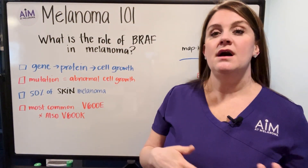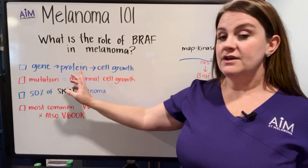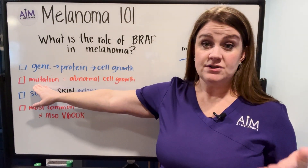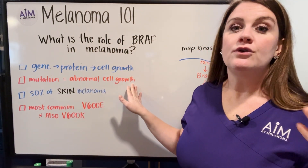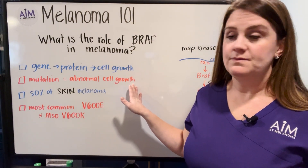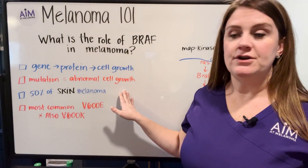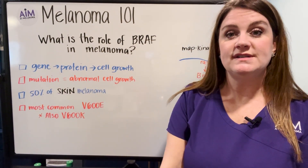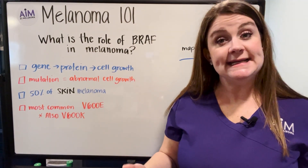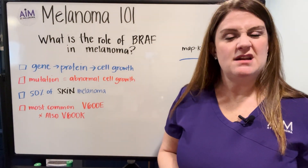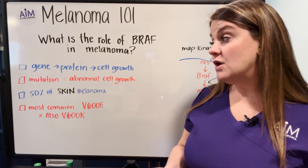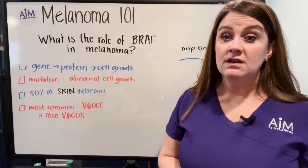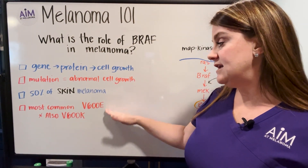A little more about BRAF: it is a gene that codes for a protein responsible for cell growth in melanoma. The mutation in the BRAF gene results in abnormal or quicker cell proliferation in a melanoma cell — an abnormal growth pattern. This BRAF mutation isn't present in all melanomas; it's present in about 50% of cutaneous or skin melanomas. The most common mutation is BRAF V600E, present in about 85 to 90% of all BRAF-mutated melanomas. The next most common is V600K, present in about 5 to 7% of melanomas. BRAF inhibitors target these specific mutations.